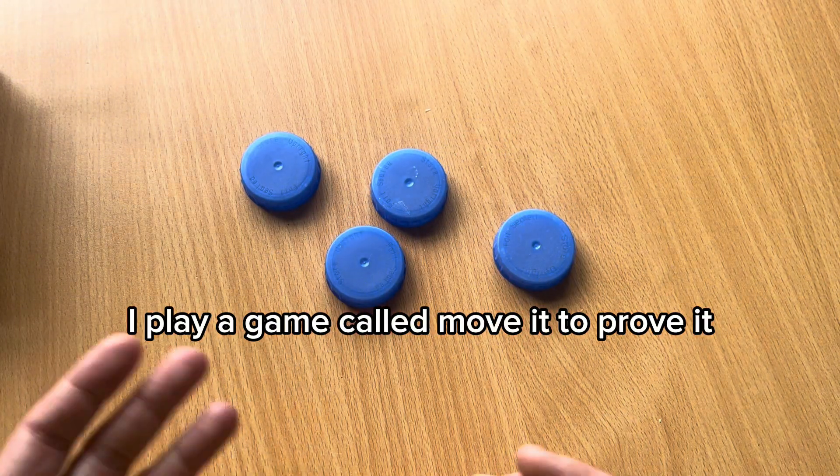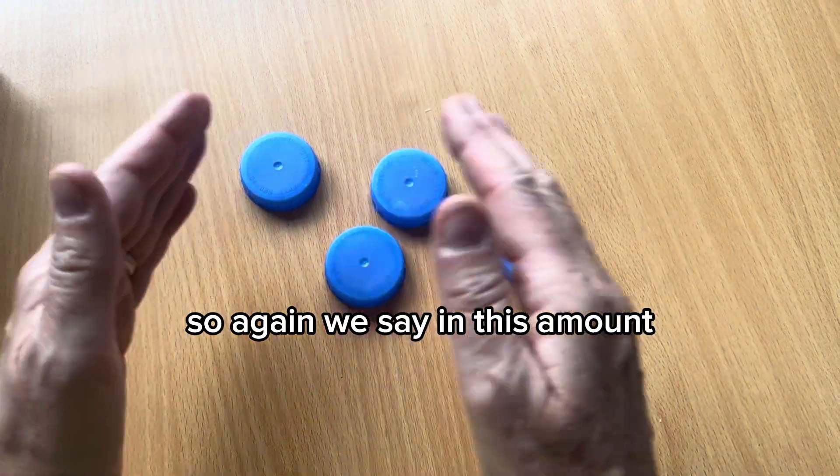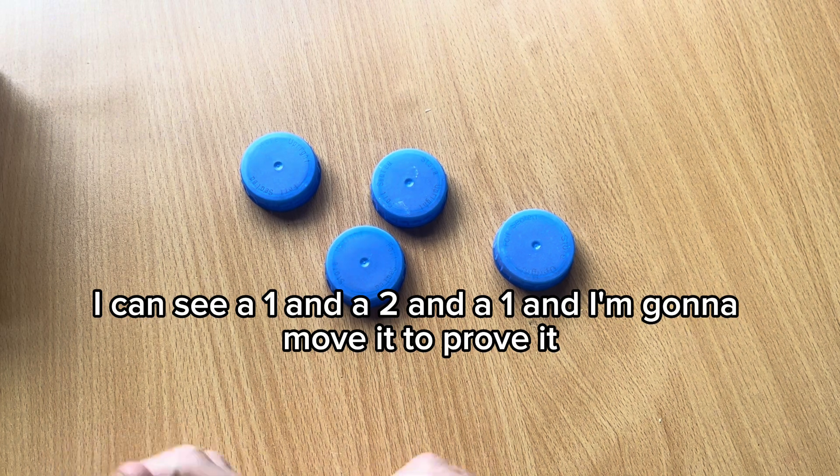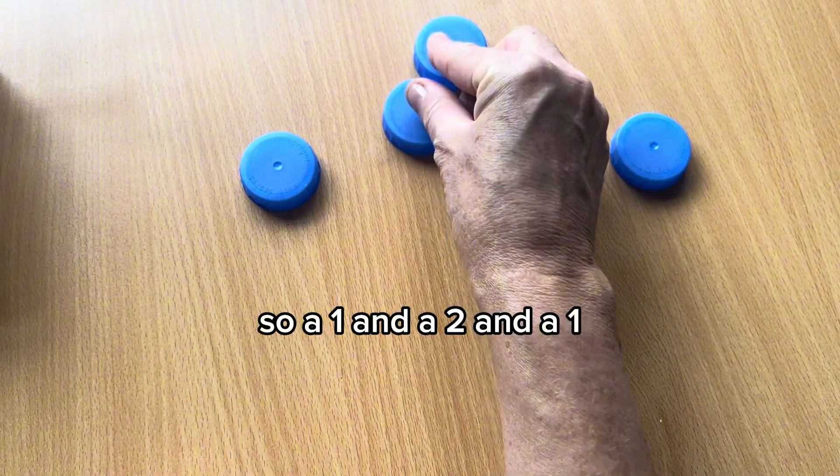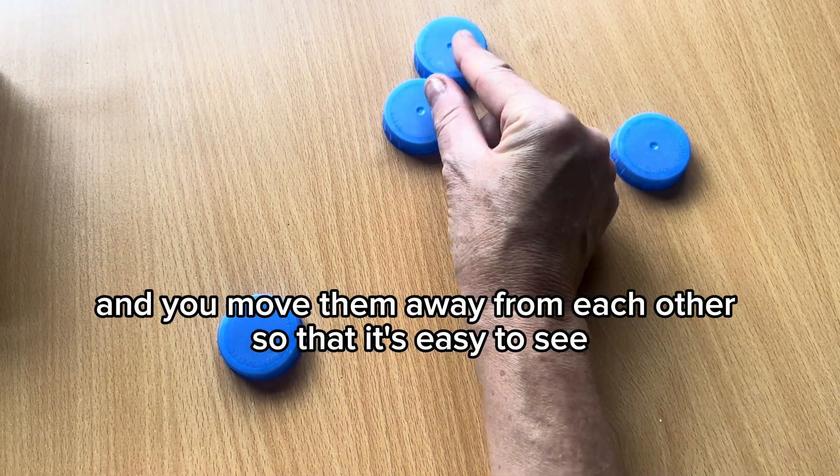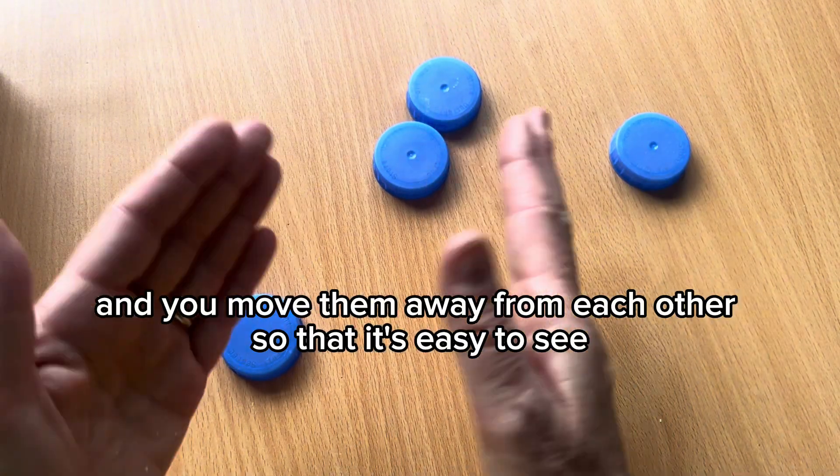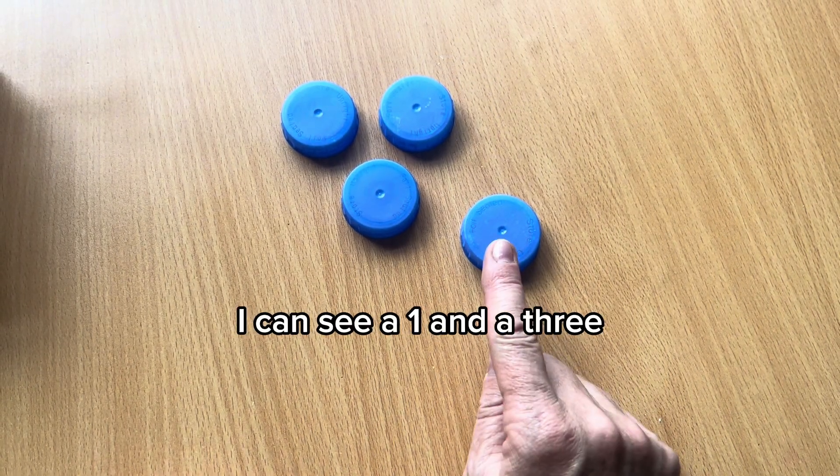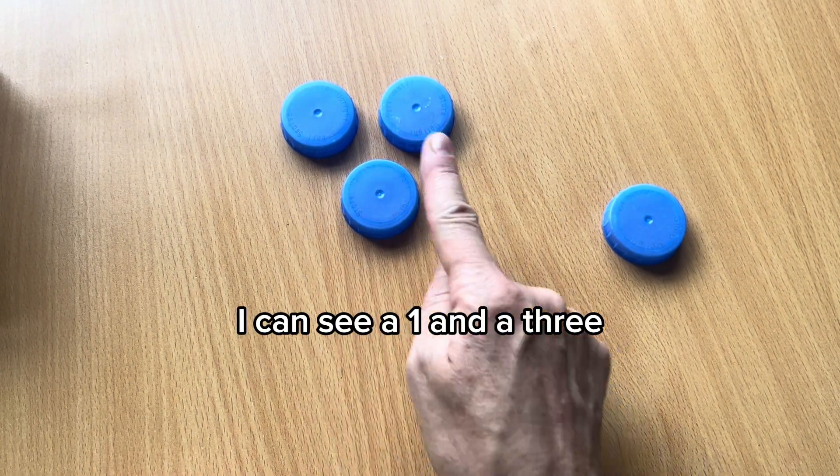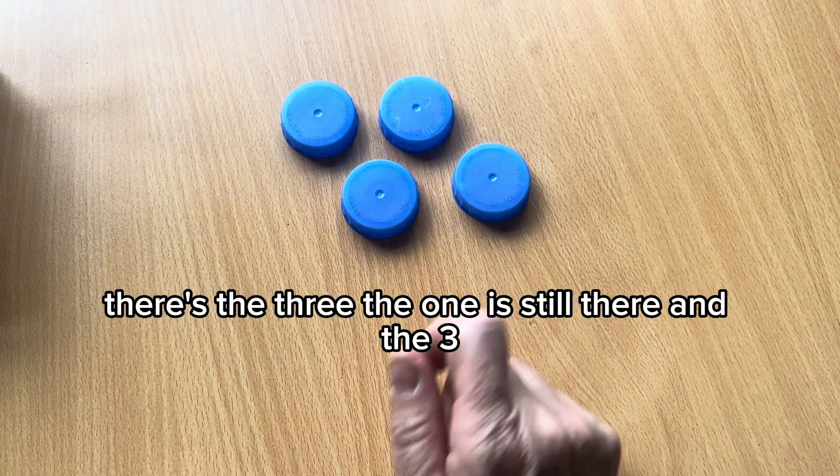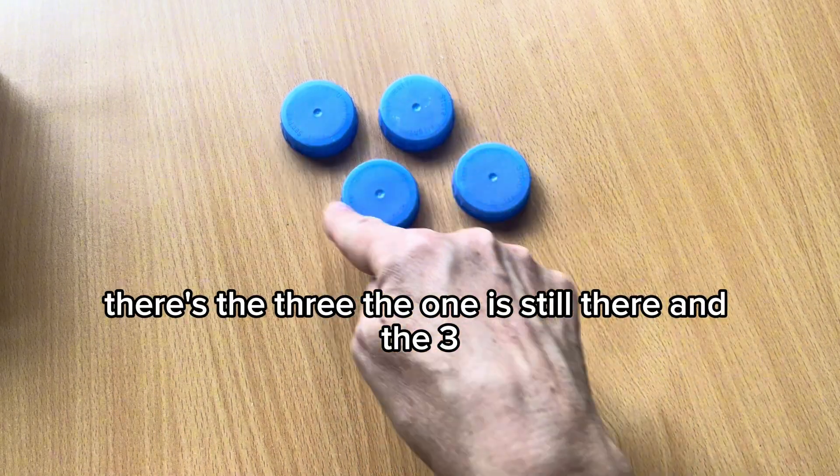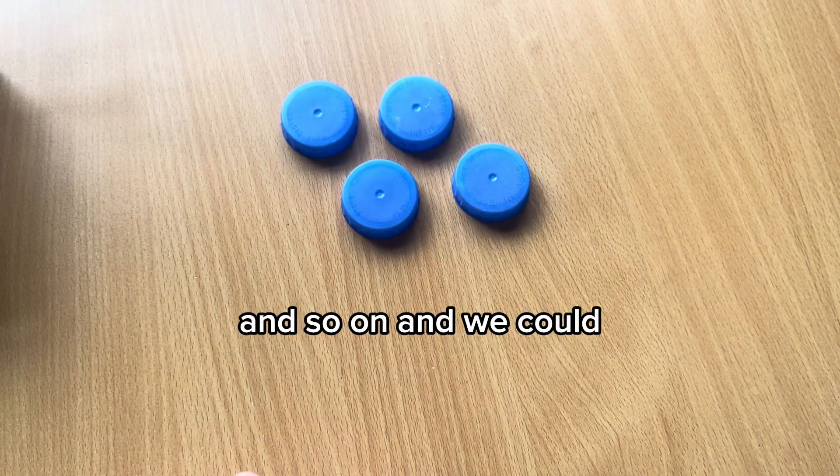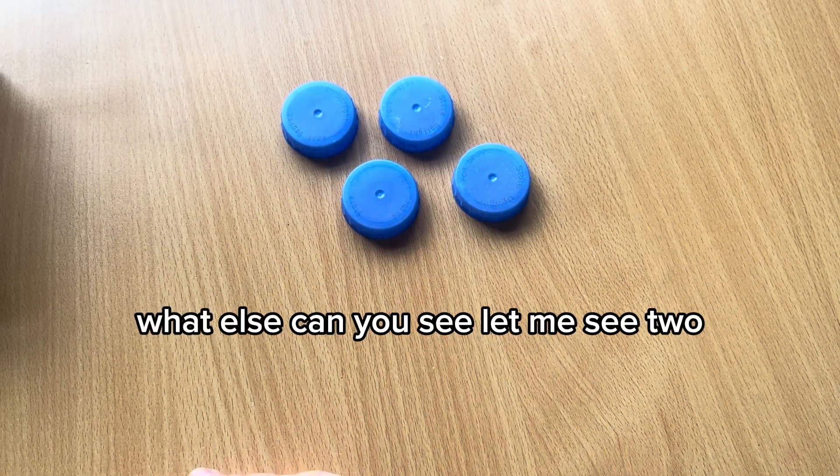There's a lot more we can do as well. I play a game called Move It to Prove It. So again, we say in this amount, I can see a one and a two and a one and I'm going to move it to prove it. So a one and a two and a one. And you move them away from each other so that it's easy to see. Really important for children. Let's put them back together again. What else can you see? Well, I can see a one and a three. Move it to prove it. There's the one. There's the three. The one is still there and the three. And of course, it doesn't have to be this one. It could be this one, that three, that one, that three, and so on.